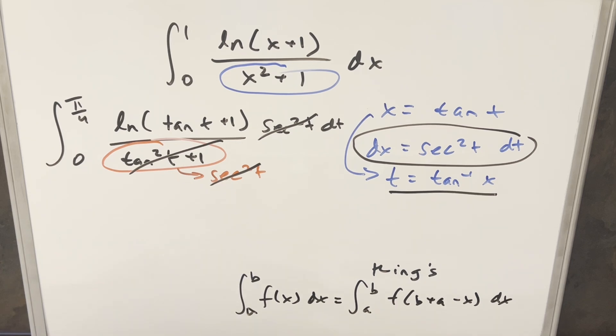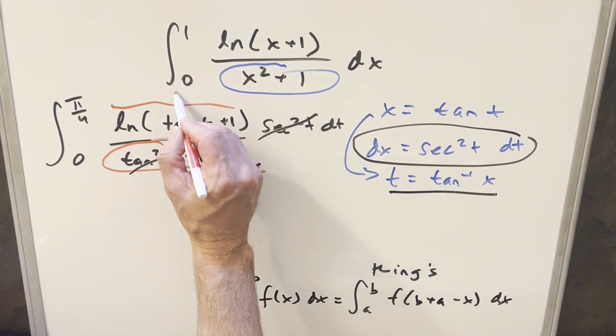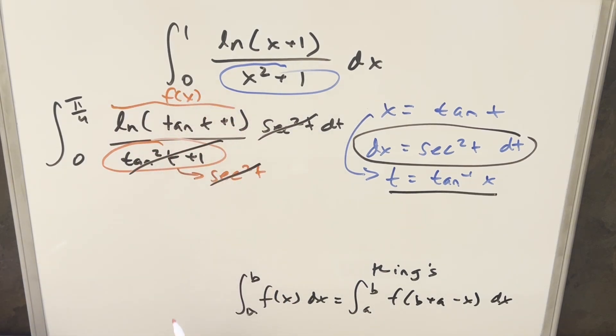To transform this, this piece right here is going to be our f of x. And what we want to find is f of b plus a minus x, a and b being zero and pi over four. So you put that together, what we want is f of pi over four minus t.